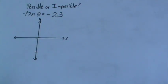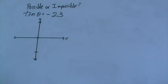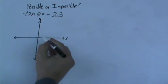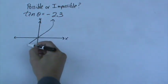So here's another problem for possible or impossible. So now we have tangent of theta equals negative 2.3. The first thing that you should be thinking to yourself is what does the graph of tangent look like? Tangent looks kind of something like this.